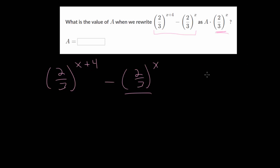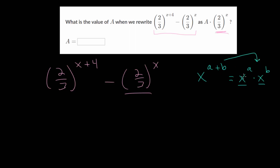To do that, we need to recognize that we have a sum in our exponent. If we have x to the a plus b power, then this can be rewritten as x to the a multiplied by x to the b. Remember that if we have two exponential expressions with the same base, we can add the exponents. So, we're working in reverse. Now, let's rewrite this as 2 thirds to the x power multiplied by 2 thirds to the 4th power. Notice that we have the same base, so we could recombine these by adding the two exponents like we originally had.